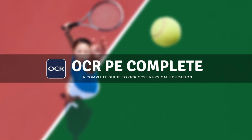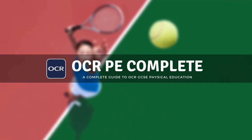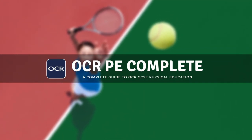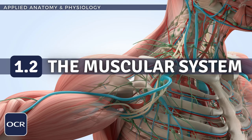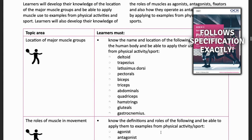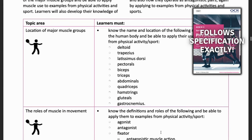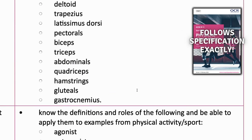Hello and welcome to another complete OCR GCSE PE lesson, where you'll learn absolutely everything you need to know on topic 1.2, the structure and function of the muscular system. As always, we'll be following the OCR syllabus exactly, and we'll cover absolutely everything you need to know for your final exam.